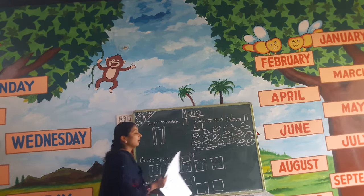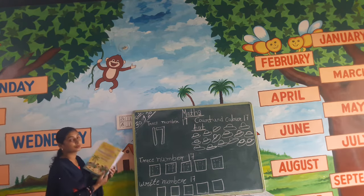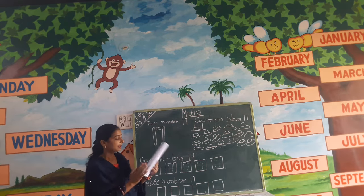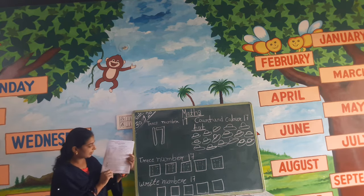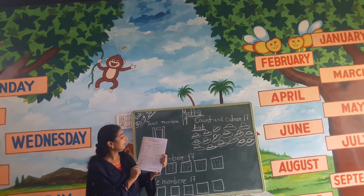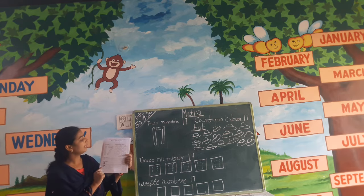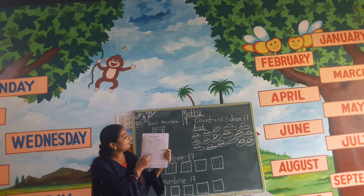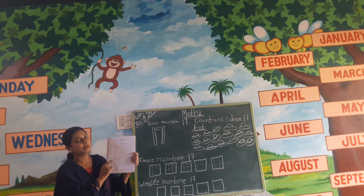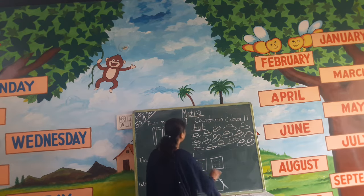Please all students open your books. Open books. Page number 29. Look at here — count and color 70 hands.